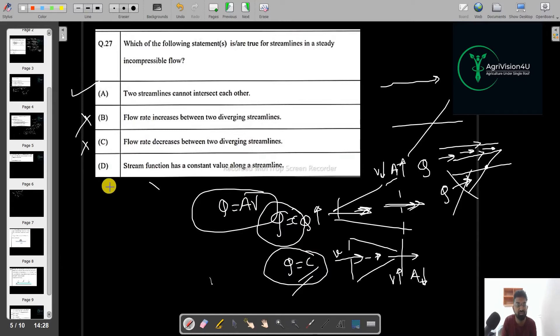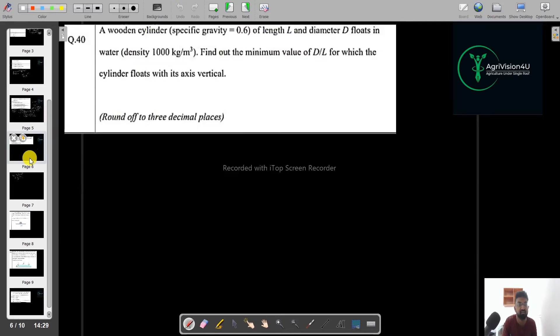Now next stream function has a constant value along this streamline. Yes, definitely. If I talk about one streamline, if suppose this is a streamline, then along the path that stream function will have constant value. So that is the true statement. So I can say that the A and D, we got A and D as the answer. So this is the MSQ type question. And I think you got this answer correctly.